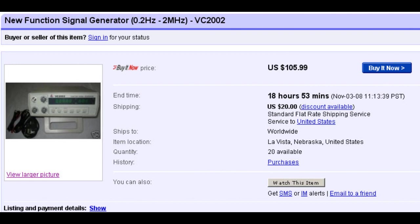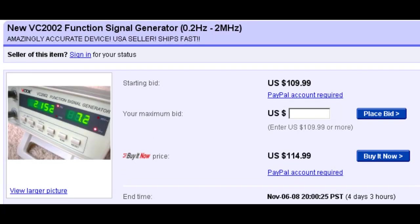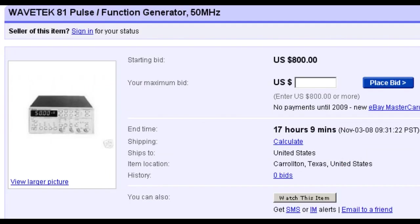You can get a function generator off of eBay for about 100 bucks. They're all pretty much the same, and the main thing you need to worry about is the maximum frequency that they can output. My generator only goes up to 2 MHz, but if you're willing to spend the cash, you can get a generator that'll create signals up to 50 MHz and beyond.